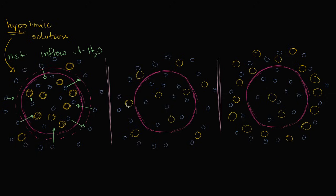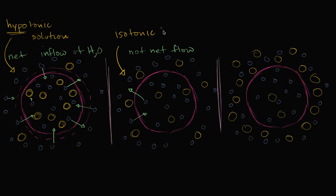In this next scenario, we have roughly equal concentrations of solute on the outside and on the inside. So in this situation, the probability of a water molecule in a given period of time going from the outside to the inside, or from the inside to the outside, is going to be the same. You're not going to have any net inflow or net outflow — you're always going to have water molecules going back and forth, but there's not going to be any net flow. This type of solution, where you have the same concentration of solute in the solution as inside the cell, we would call this an isotonic solution. The prefix 'iso' refers to things that are the same, so it has the same concentration of solute.